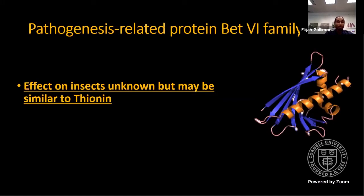So why pathogenesis-related protein? Again, it was down-regulated in a similar fashion post-fall armyworm feeding. As the name suggests, it's related to thionin, and the effects on insects may be similar to thionin, but are heavily misunderstood or unknown at this point in time. One interesting thing which is known about this protein is that it's one of the best-known plant allergens for humans.